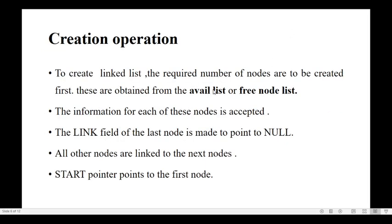First check the available list. If memory is available, we can utilize that memory and create a new node. The information for each node is accepted from the user and assigned to the node. The link field of the last node is made to point to null, while all other nodes are linked to the next node. The start pointer points to the first node. Each node's link part is connected to the next node, and the last node's link part is null.